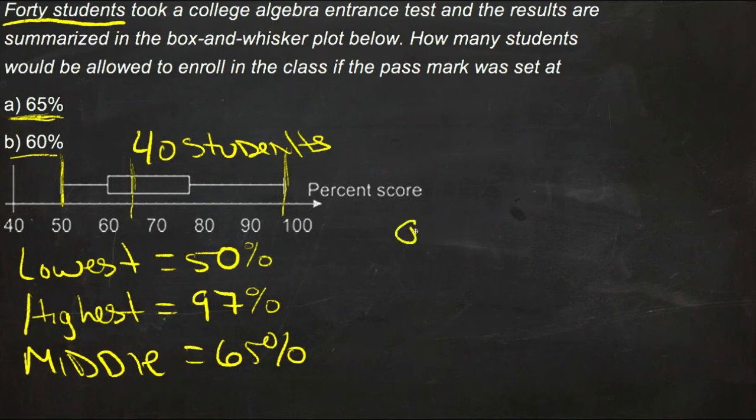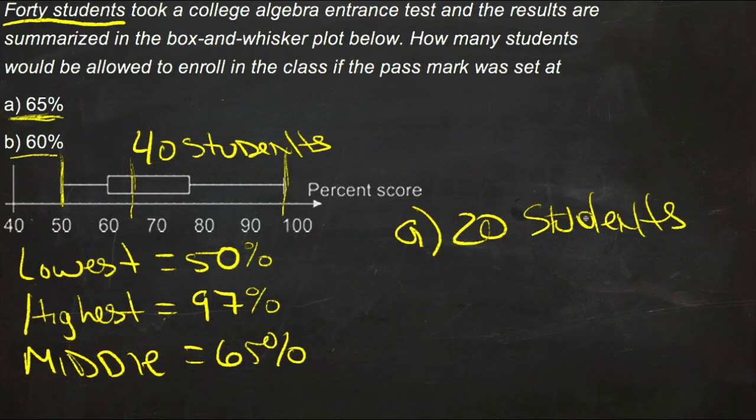For part A, there would be 20 students that were above 65%, because 65% is right in the middle of those 40 students.